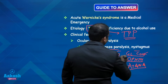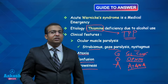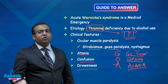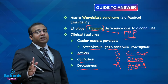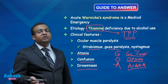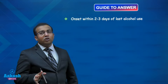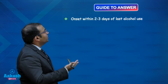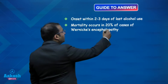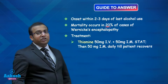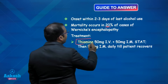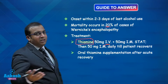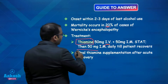This patient has confusion, ophthalmoplegia in the form of oculomotor muscle paralysis, and ataxia — confirming Wernicke's encephalopathy due to thiamine deficiency, with thiamine pyrophosphate as the deficient cofactor. It is a medical emergency that can be fatal, occurring within 2–3 days of last alcohol use. Mortality occurs in as many as 20% of cases. Treatment involves parenteral thiamine supplementation — given IM stat, then as IV infusion, with the patient admitted, and subsequently oral thiamine supplementation on discharge.